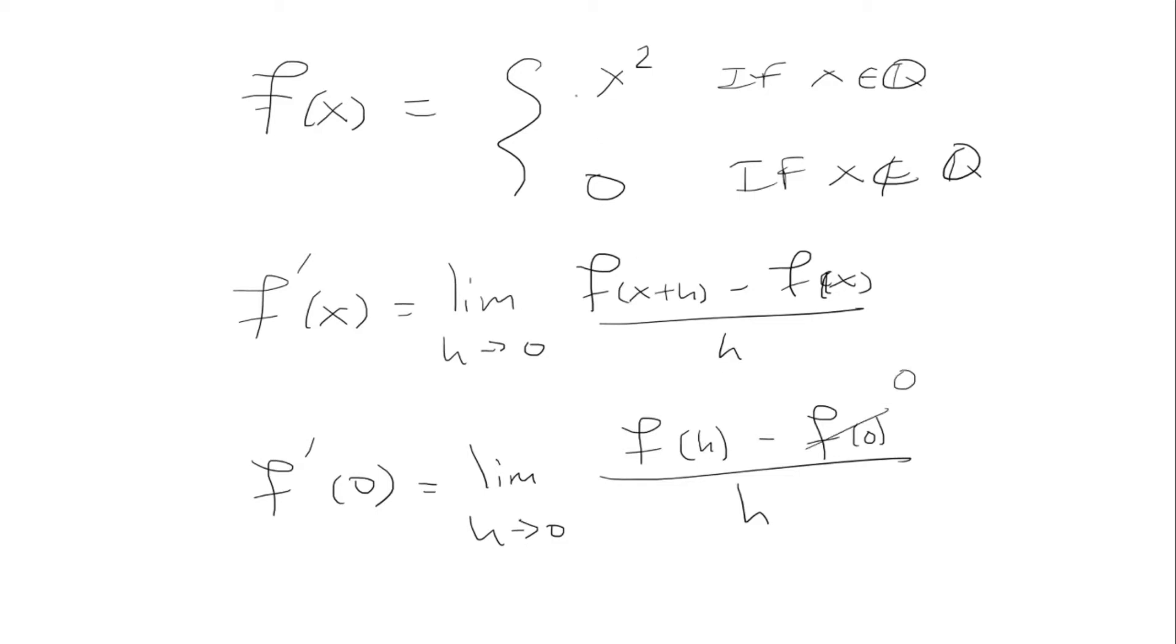f of h depends. So if h is rational, it's going to be h squared. If h is irrational, it's going to be 0. So that's where we're going to have two cases.